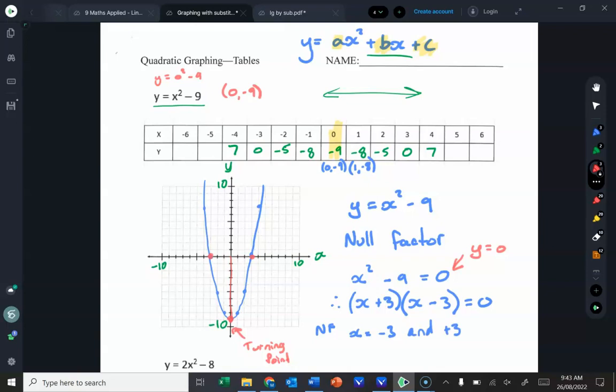The y intercept, and very importantly, the turning point. And once I've got those three points or four points, I can just plot my graph in, and it's much, much faster.